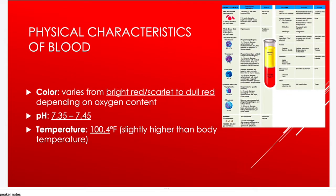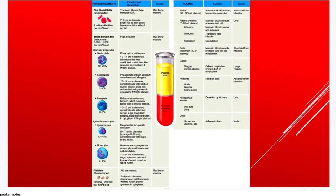Blood temperature is slightly higher than body temperature. Normal body temperature is 98.6°F, but blood is about 100.4°F, which helps maintain overall body temperature. The formed elements include erythrocytes (red blood cells), which carry oxygen; leukocytes (white blood cells), which fight infection; and platelets, which help with hemostasis — stopping bleeding. All of them are made in the red bone marrow.